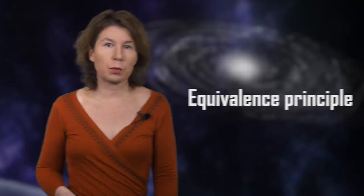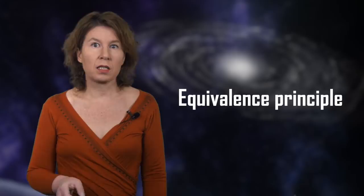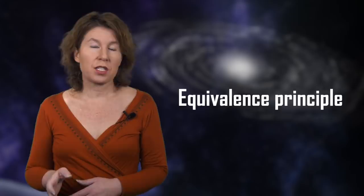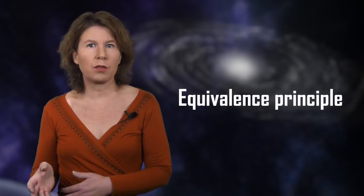Finally, one can test a key assumption underlying general relativity, which is the equivalence principle. The equivalence principle says, loosely speaking, that all objects should fall the same and, most importantly, how fast they fall doesn't depend on their mass. This is much easier to measure than the gravitational field of particles because when you test the equivalence principle you're looking for a difference.